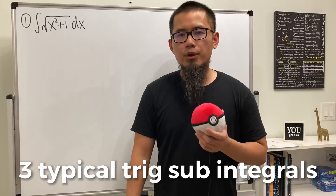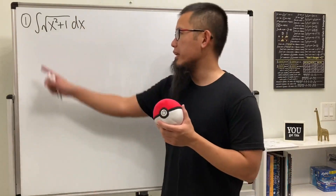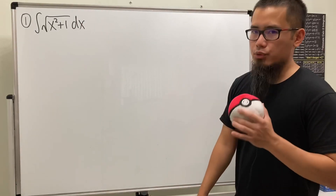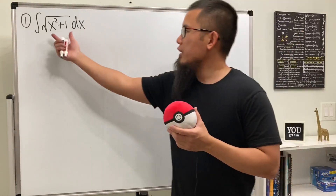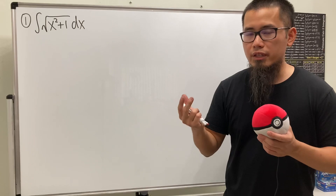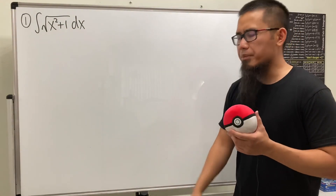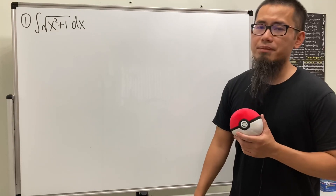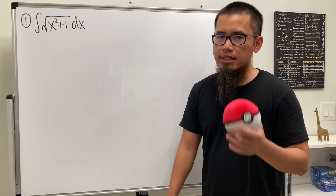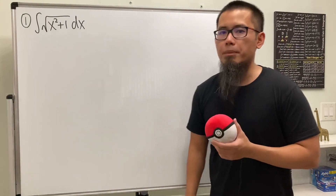In this video we'll be doing three typical trig substitution examples that you must know for your Calculus 2 class. For the first one we have the integral of the square root of x squared plus one. The idea behind trig substitution is that if we have these two terms we can combine them into just one term, and if that's still a perfect square then we can cancel the square root — kind of like completing a square. We look at the identities to find a sum of two squares that combines into one perfect square term.